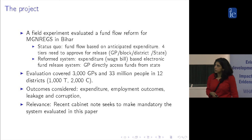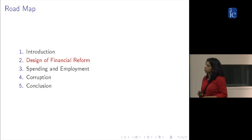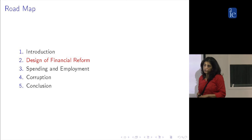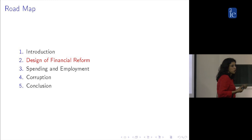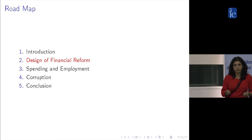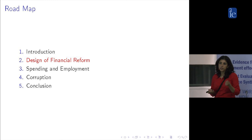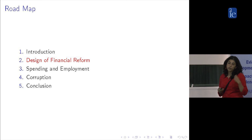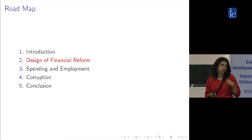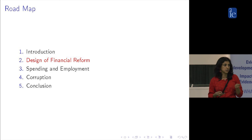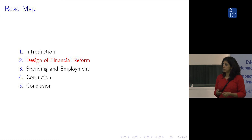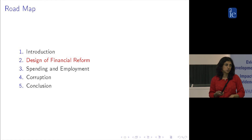Today I want to talk briefly about what this financial reform was, then talk about the two aspects we think it might have affected. On one hand, the fund flow and, related to that, something governments care a lot about: the float of funds, or how much dormant funds are sitting in bank accounts. On the second side, what happened to spending and employment. And finally, was there any change in corruption?